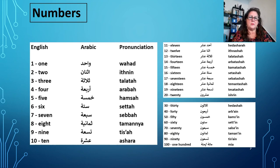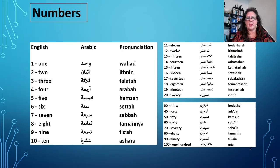Let's learn some Egyptian numbers. 1 is Wahad, 2 is Ethnin, 3 is Talata, 4 is Arabah, 5 is Kamsah, 6 is Setah, 7 is Sebah, 8 is Temanya, 9 is Tesarah, 10 is Asherah. Apologies if my accent isn't brilliant. We can also see that these numbers have their roots in 20, 30, 40, 50, 60, and 100 is Mia.